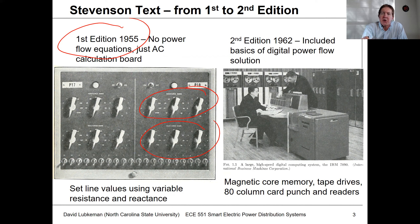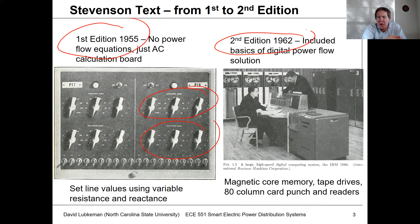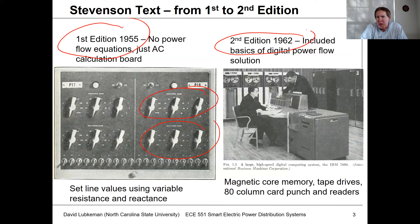This is when the power flow that we work with today actually got developed, on some of these early computers. Stevenson's second edition, which came out in 1962, showed an early IBM mainframe computer system. We had magnetic core for memory, tape drives, and programs punched on 80-column cards. You'd punch these cards out and put them into a card reader. Utilities started using these types of programs for transmission studies in the 60s, and it wasn't really until the personal computer became popular in the 80s that we transitioned from running on mainframes.